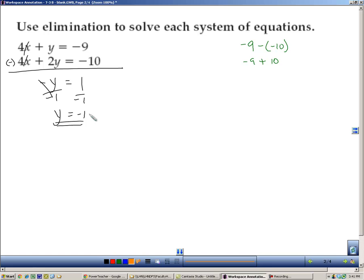I'll plug that now into the first equation, so 4x plus negative 1 equals negative 9. I'm going to add 1 here to get rid of that, so 4x equals negative 8, and then divide both sides by 4, so x equals negative 2.